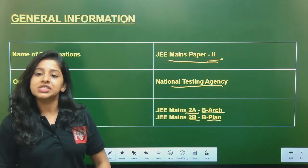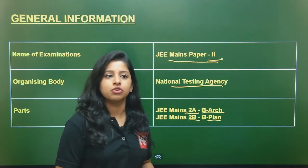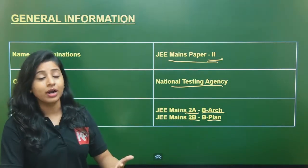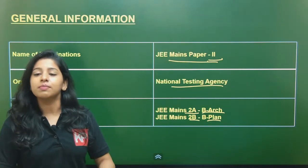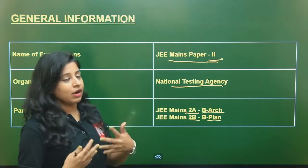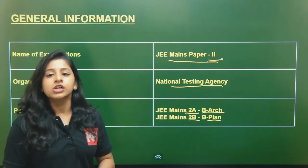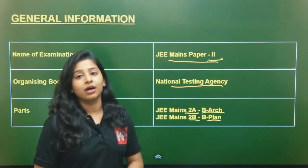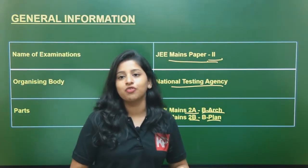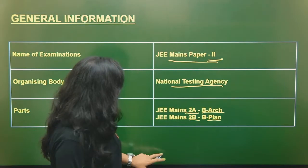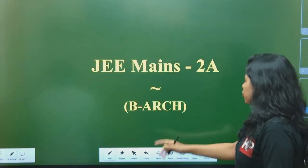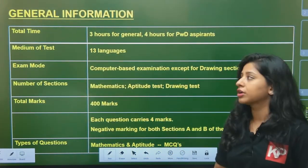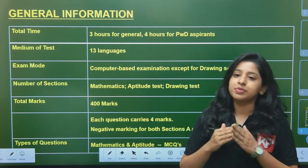When you appear for the examination, you will be given the option to select 2A or 2B. If you are an architecture aspirant, you will select 2A, whereas if you want to pursue planning after class 12, you will select 2B. In this video we will specifically talk about the exam pattern for B.Arch — JEE Mains Paper 2A. This examination is completely computer-based, except for the drawing part.